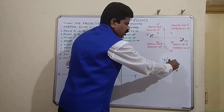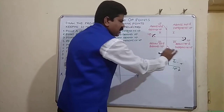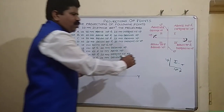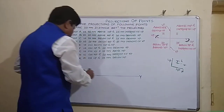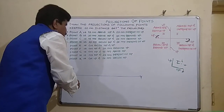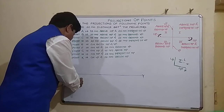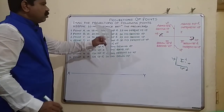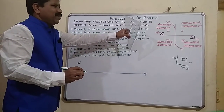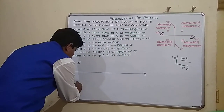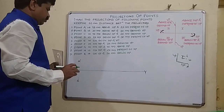If the object is above HP, the image of the object will get developed on the vertical plane — meaning the front view develops on the vertical plane, whereas the top view will be developed on the horizontal plane. So the front view will be above XY and the top view will be below XY. According to this, 15 millimeter above HP: I take that distance above XY, and 25 below XY. A dash is above XY and A is below XY.